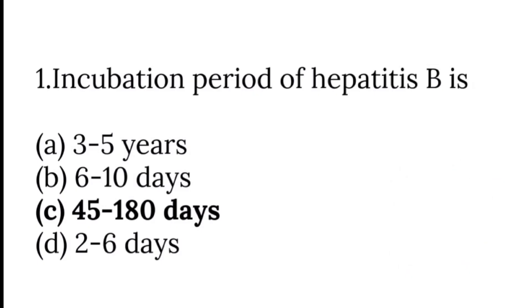The incubation period of Hepatitis B is 45 to 180 days. Incubation period means from the entry of any pathogen, bacteria, or virus into the body to the appearance of the first sign. For Hepatitis B, it is 45 to 180 days.